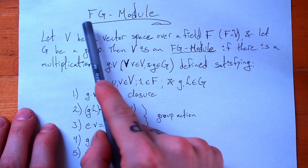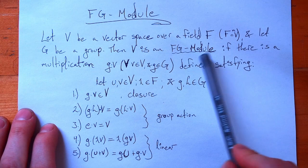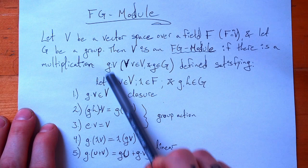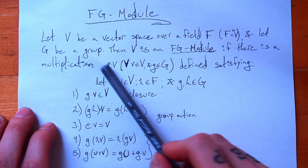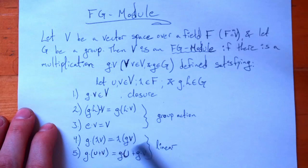Then we say V is an FG module if there is a multiplication satisfying the following properties. So we have a group element and an element of the vector space — they live in completely different sets. But if we have some way of combining them, even though they're different objects in different spaces, that satisfies these following properties, then we upgrade that vector space to an FG module.